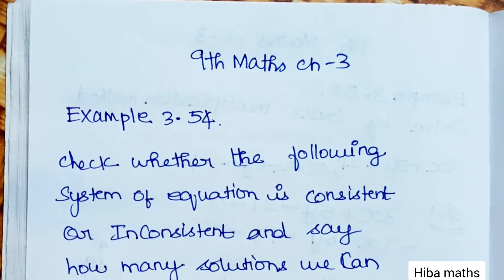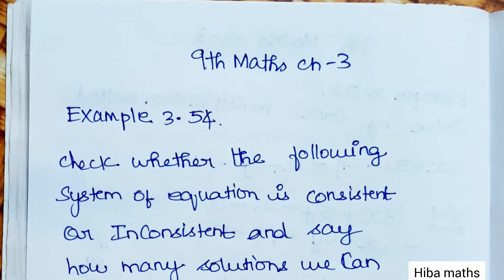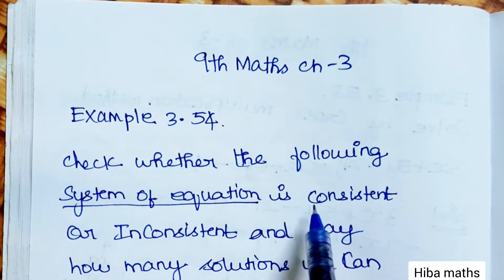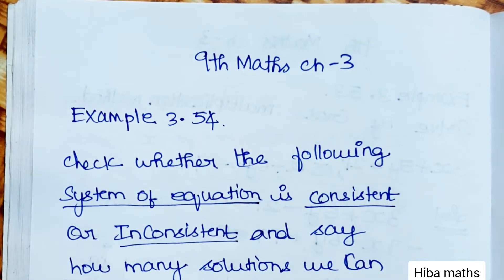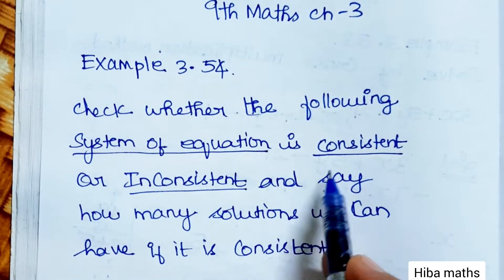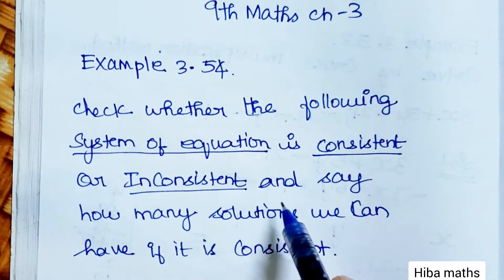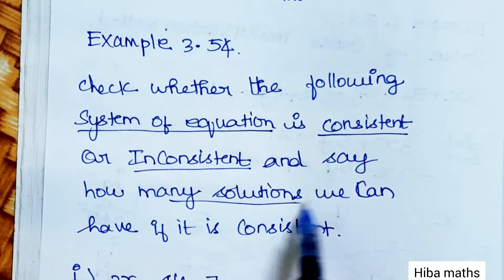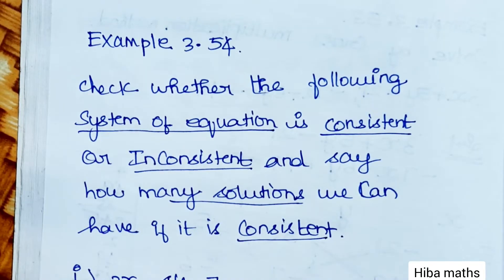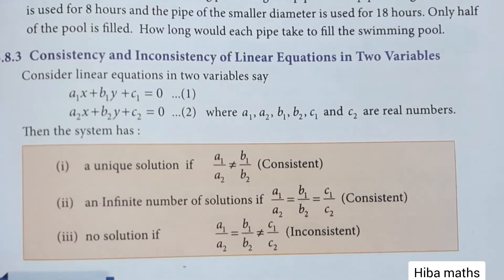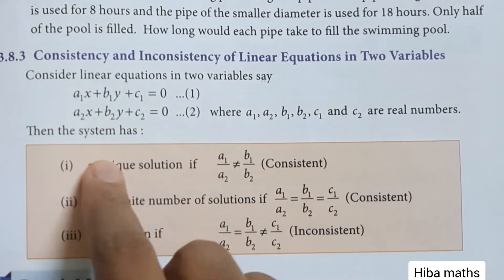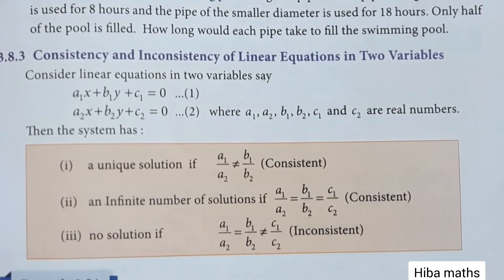Hello students, welcome to Hibamaks 9th Standard Max Chapter 3, Example 3.54. We will check whether the following system of equations is consistent or inconsistent, and say how many solutions we can have if it is consistent. We will explain the consistency and inconsistency of linear equations in two variables.